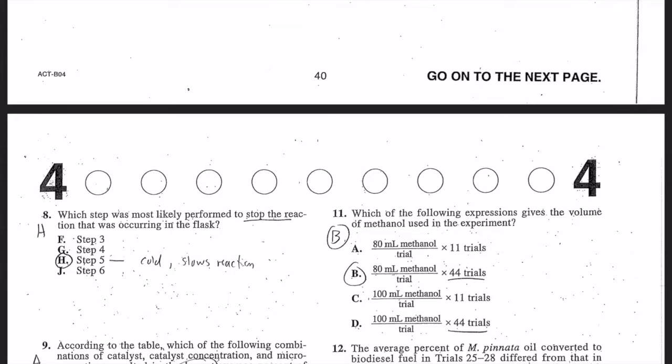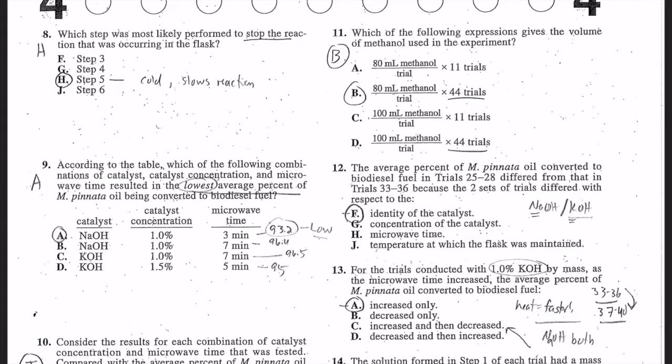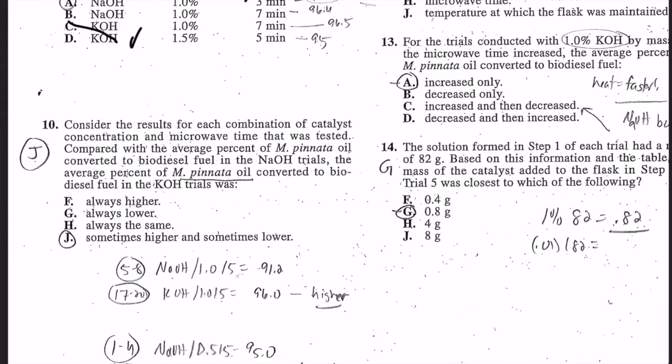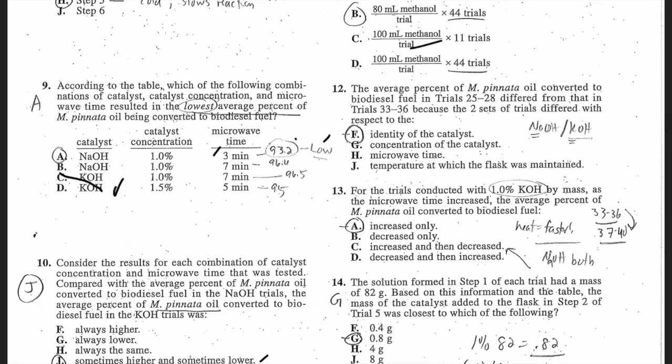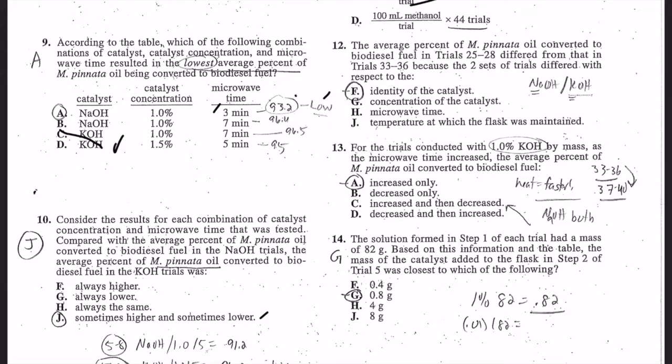Number eight: step five was adding ice - cold slows down the reaction. If you've taken chemistry, you know increasing the rate of reaction, increasing the kinetic energy, raising the temperature raises a reaction rate. Number nine: they want the lowest. You can actually look at the data, but just by my introduction I know KOH was higher, so mark out the KOH, and the lower time. So it's NaOH with lower time. Number ten: there were sometimes higher and lower depending on it - sometimes higher, sometimes lower. There's not a direct trend there.